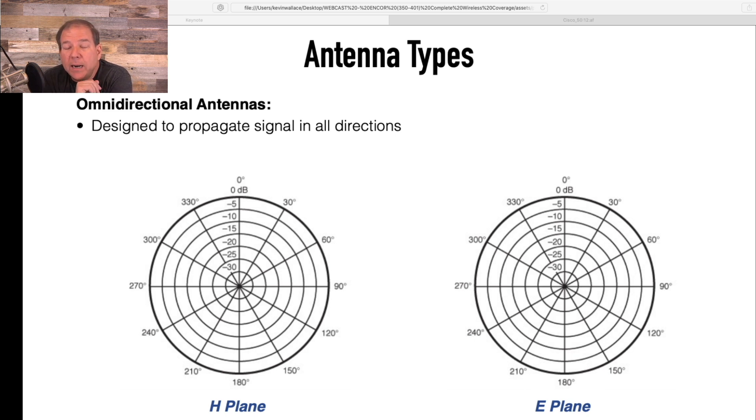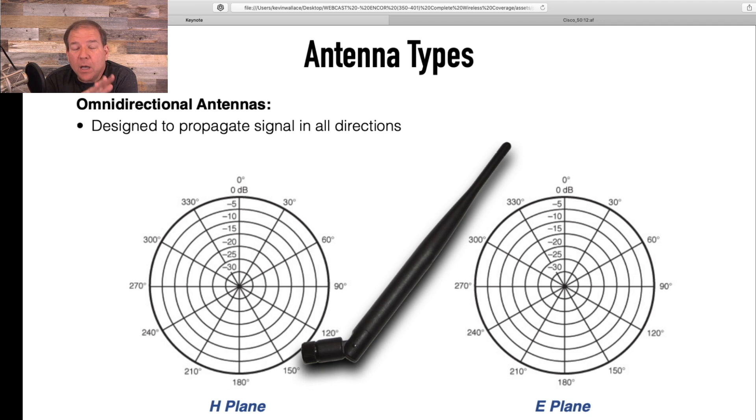But here we're looking at an omnidirectional antenna. Now an omnidirectional antenna, the goal is for it to go out equally in all directions, like the beach ball example I gave you earlier. So let's take a look at the radiation pattern of a couple of different types of omnidirectional antennas. And one of them looks a lot like this guy that we took a look at earlier. Let me just unscrew one of these antennas. And this is called a dipole antenna.